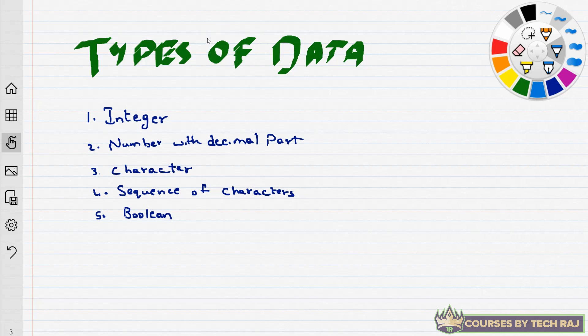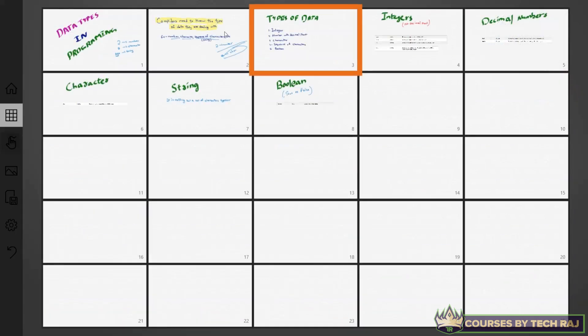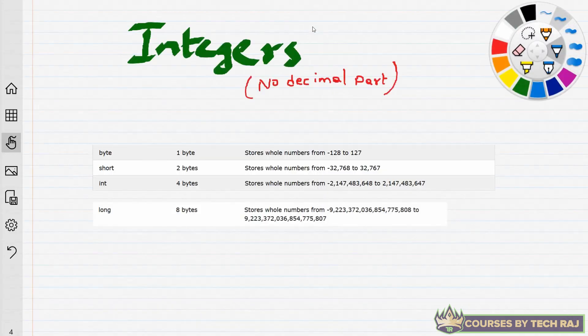The first basic data type is an integer — numbers without any fractional part. The second data type covers numbers that have a decimal or fractional part. The third is a character, which is any single character. The fourth is a sequence of characters, which we know is called a string. The fifth is a boolean. I'll be explaining each of these individually. Let's start with integers.